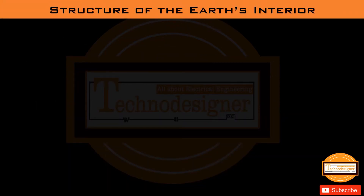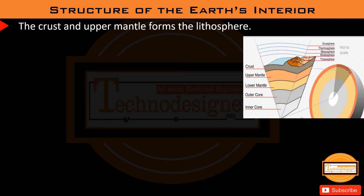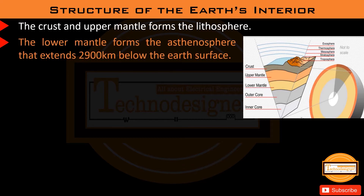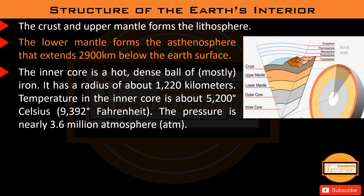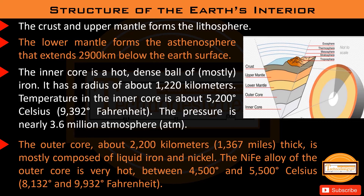The crust and upper mantle form the lithosphere, while the lower mantle forms the asthenosphere, extending 2,900 kilometers below the Earth's surface. The inner core is a hot, dense ball of iron with a radius of about 1,220 kilometers and a temperature of about 5,200 degrees Celsius (9,392 degrees Fahrenheit). The pressure is nearly 3.6 million atmospheres. The outer core is about 2,200 kilometers thick, mostly composed of liquid iron and nickel, at temperatures between 4,500 and 5,500 degrees Celsius.